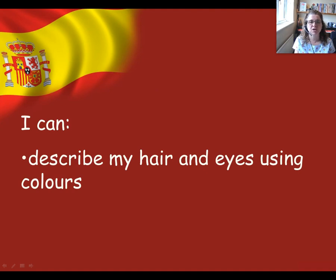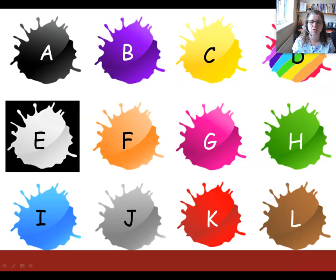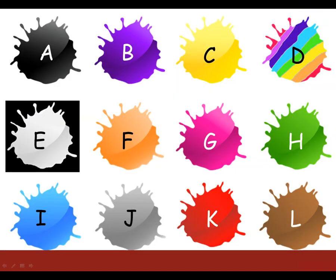Today we'll be learning how to describe hair and eyes using colours. First of all, let's just have a recap of the 12 colours. So if you could just pause the video and number 1 to 12 and press play when you're ready to listen. Right, so you've numbered 1 to 12, listen to the colour words and all you need to do is to write down the letter of that colour for your answer.